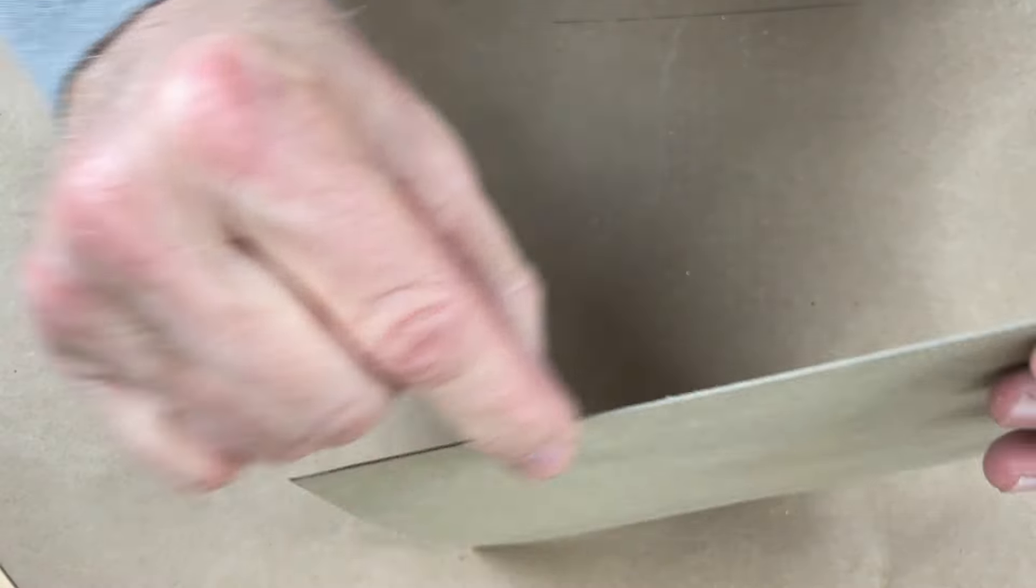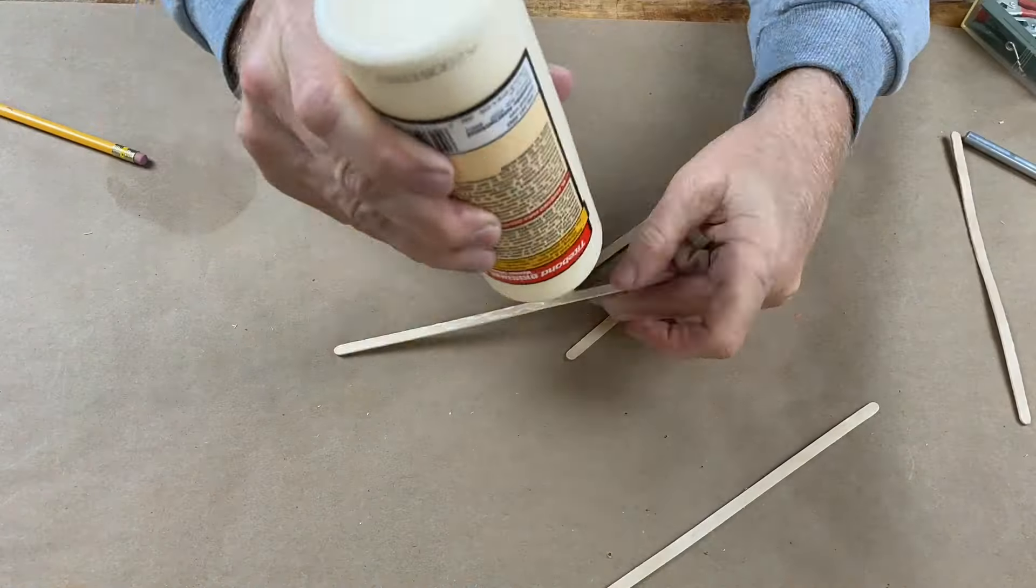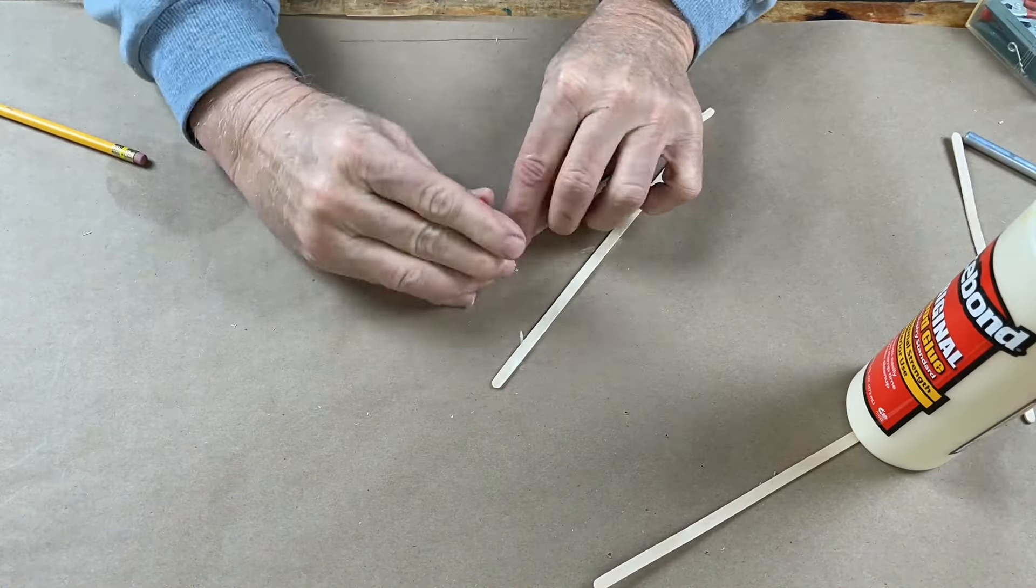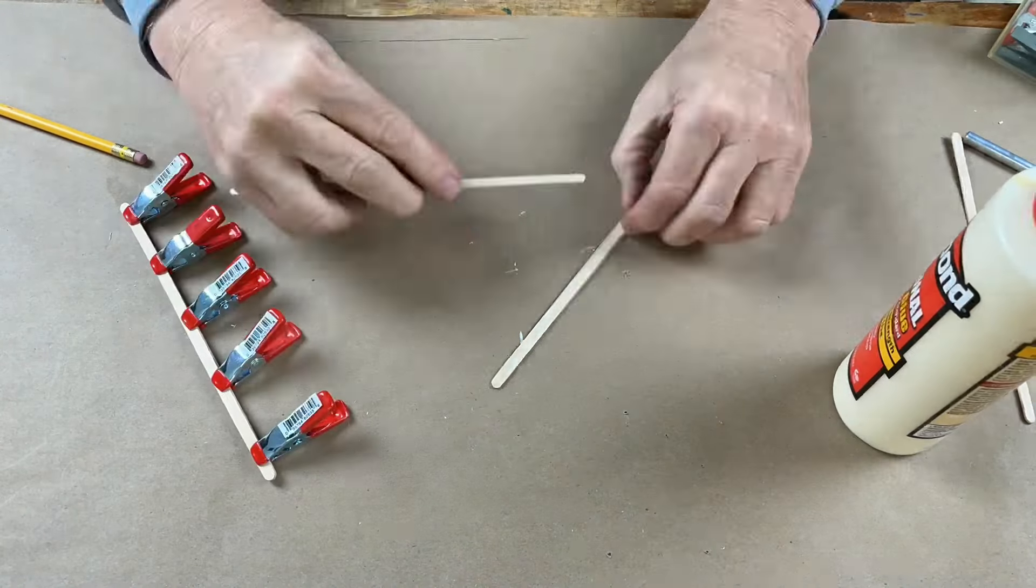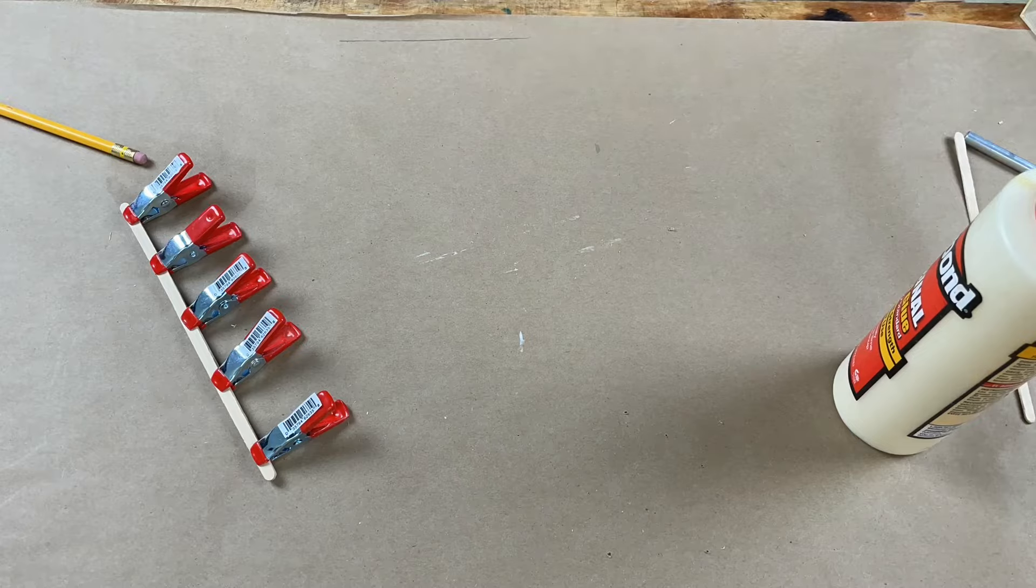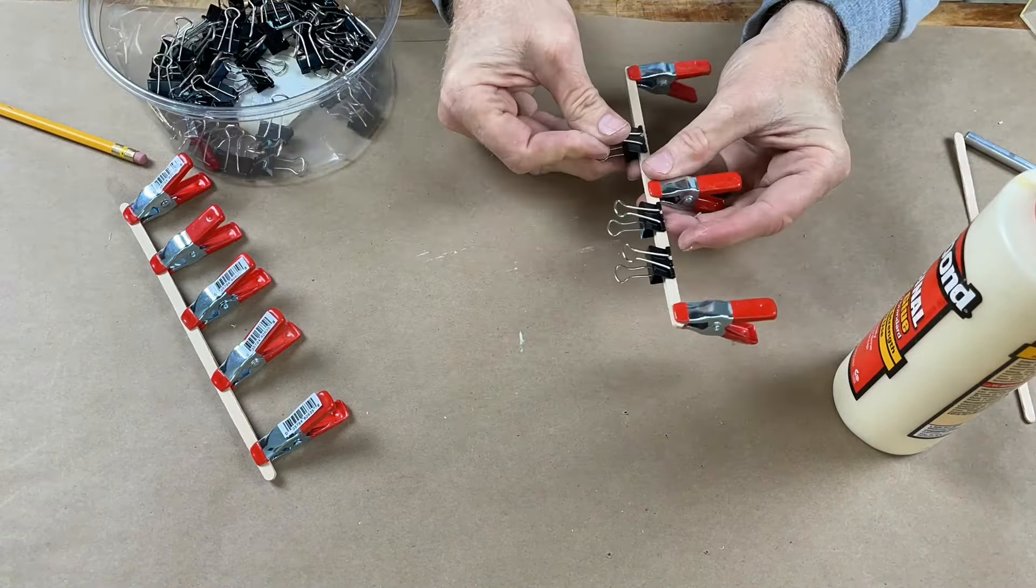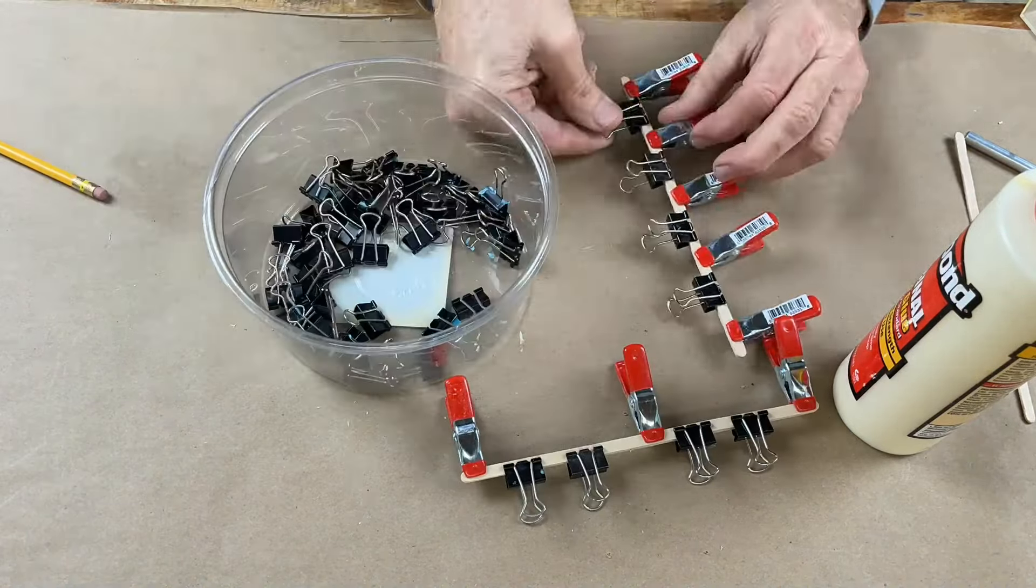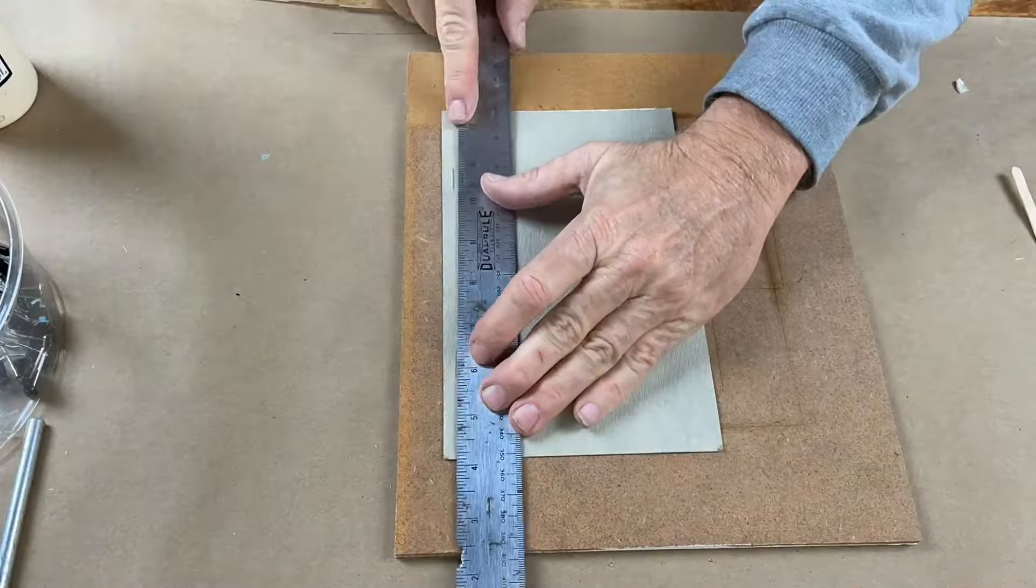So let's get to gluing. I'm using Titebond but you can use any kind of glue you want. If you don't have clamps, don't worry about it. You can just use little binder clips, they're great for clamps, but you can also just use tape.